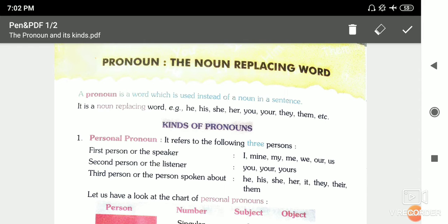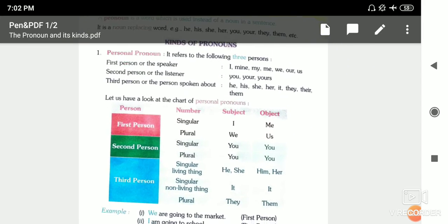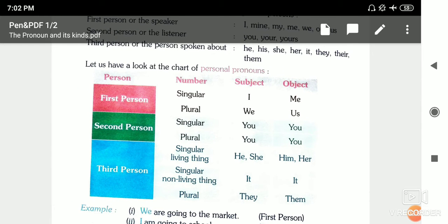Now look at the table. In first person, if I am speaking about myself in singular, I will use 'I'. But if it's plural, then it becomes 'we'. Both of these are first person.